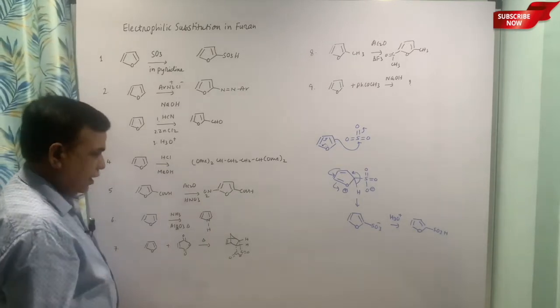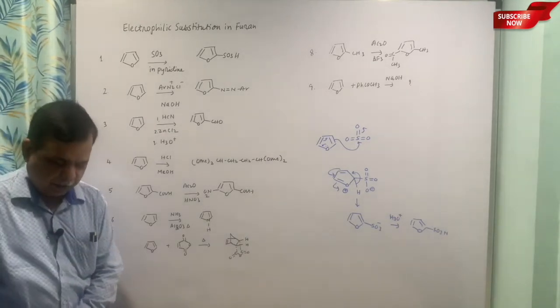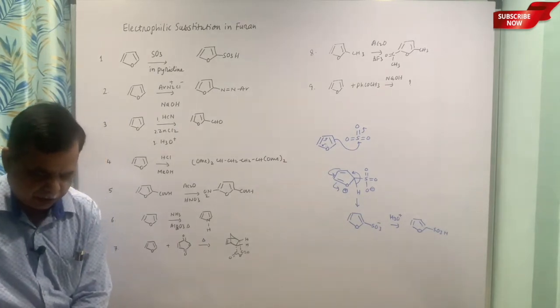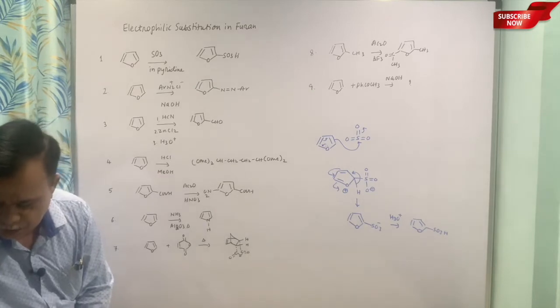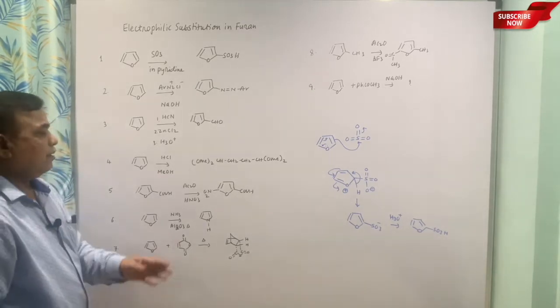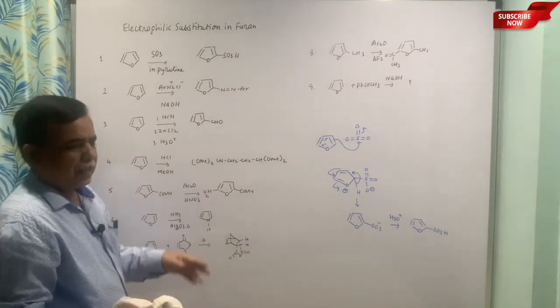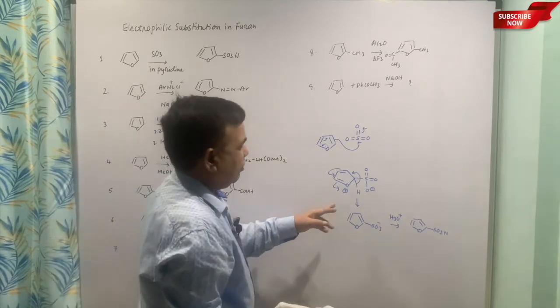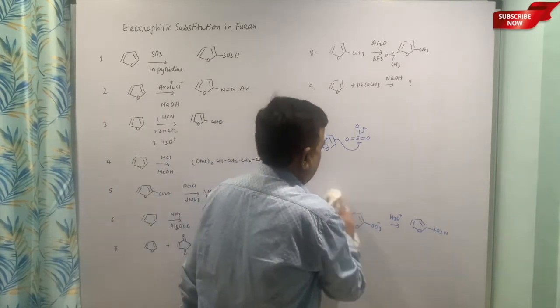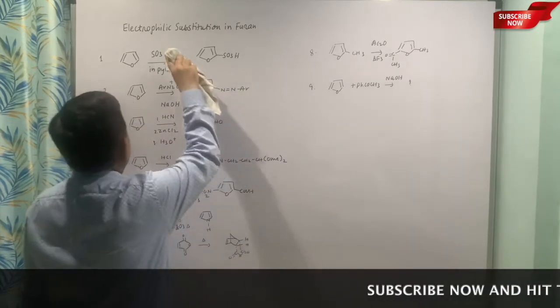That is the reagent we are using just to protect the furan ring, because aromatic electrophilic substitution of furan being the acid-sensitive substrate, we need to use milder reagent. So sulfur trioxide in pyridine is another thing. Now pyridine may help us in abstracting this proton—that is the role of pyridine in this case.